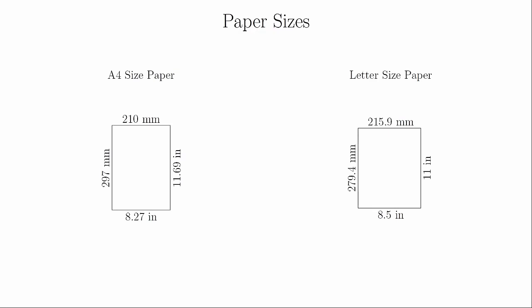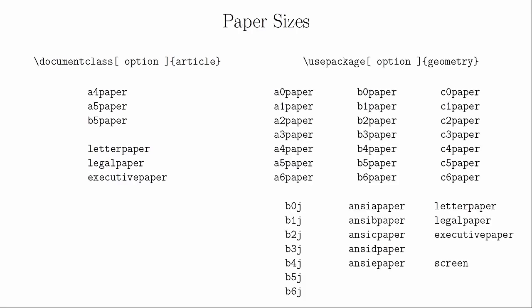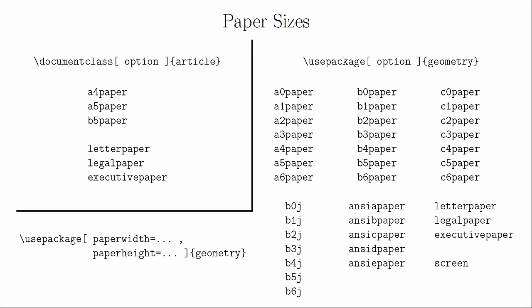One of the things that we need to talk about is paper size. Depending on your system, your default paper size may be A4 or letter size. Letter size paper is common in North America and A4 is common pretty much everywhere else. The differences are small enough that for basic applications like homework assignments, there is no practical difference. If you wanted to change the paper size, you could do it as an optional parameter for the document class. But this can also be done with the geometry package, which has a much more robust collection of paper sizes to choose from. You can even create a custom paper size by setting the paper width and paper height values as optional parameters.